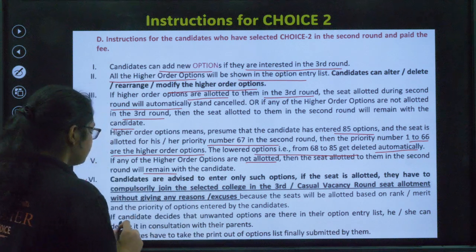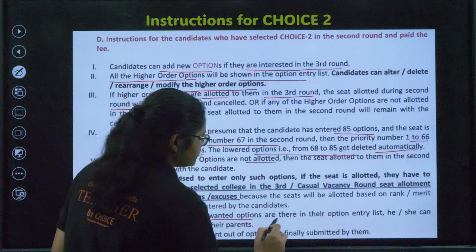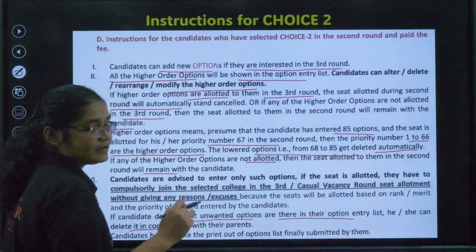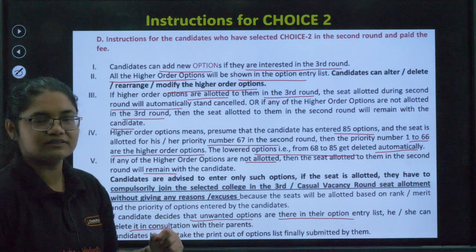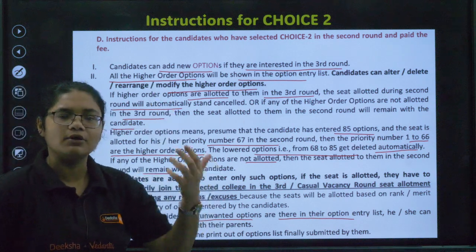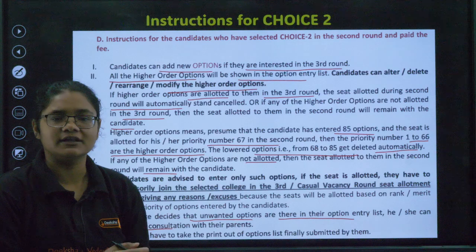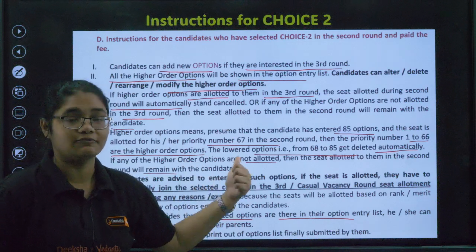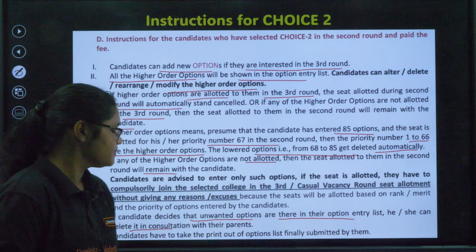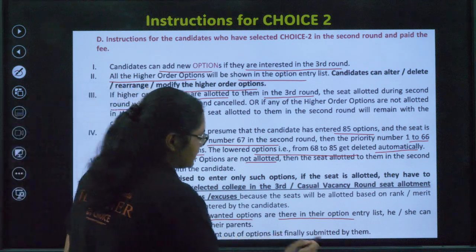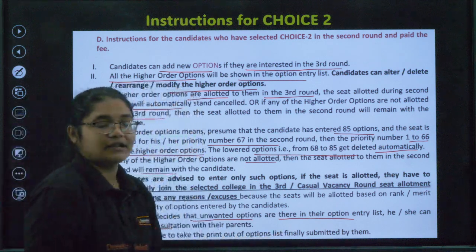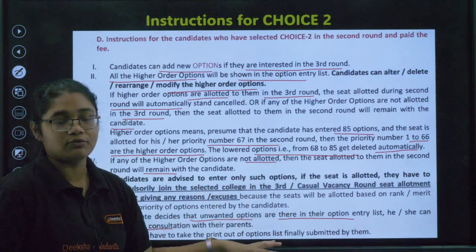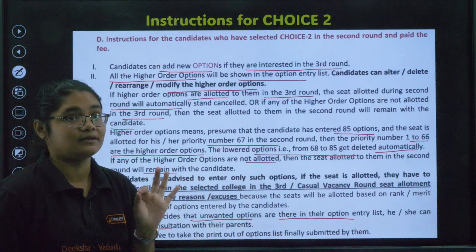Please check your option entry two to three times and make sure you have put only options where you are genuinely interested. If a candidate decides that unwanted options are there in their option entry, they can delete it in consultation with the panel. If you are not interested in a college, simply remove it, because if that college is allotted, you have to definitely join. Also, candidates must take a printout of the option entry submitted by them.